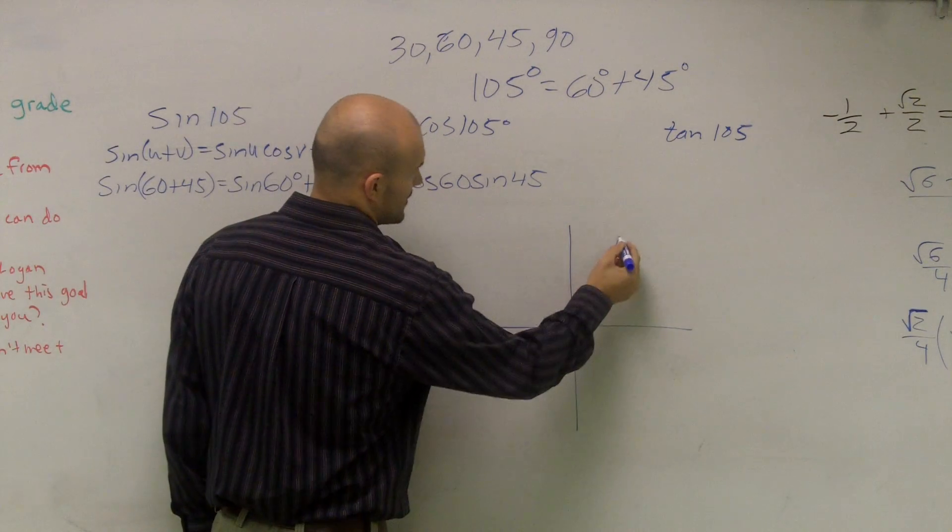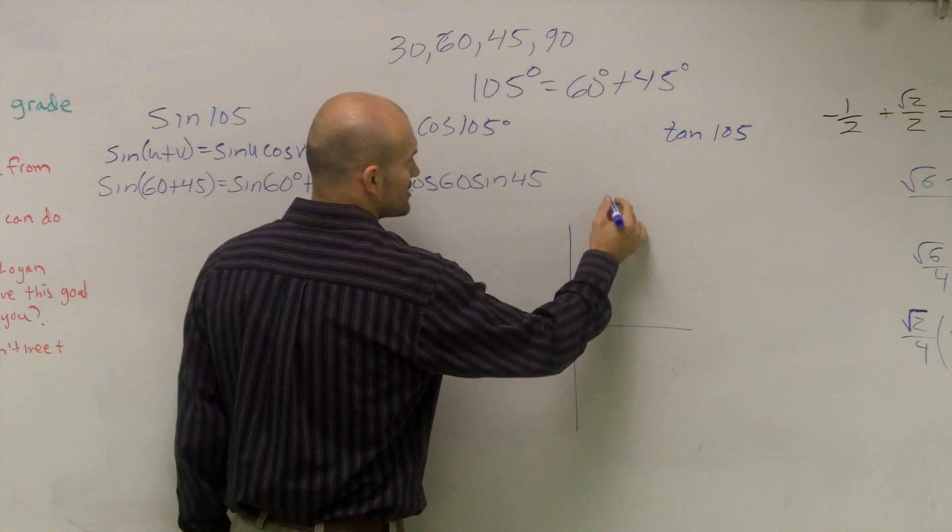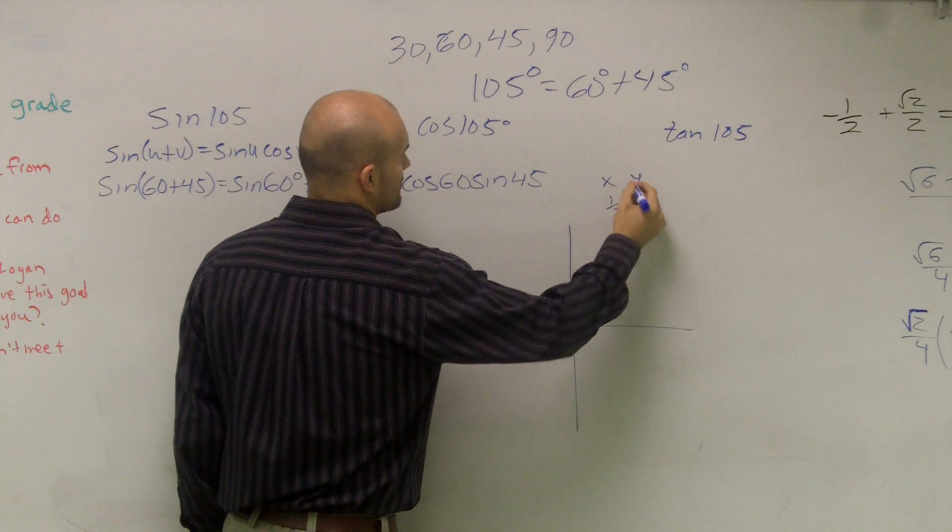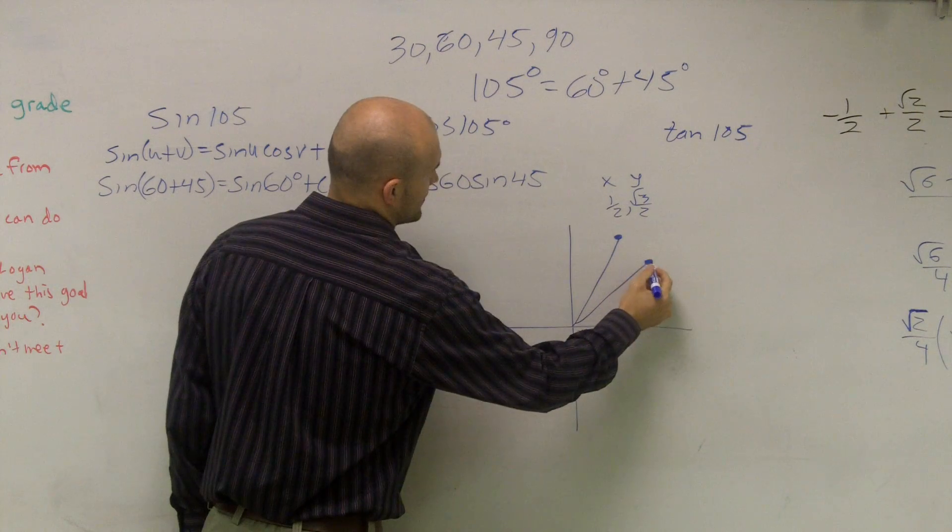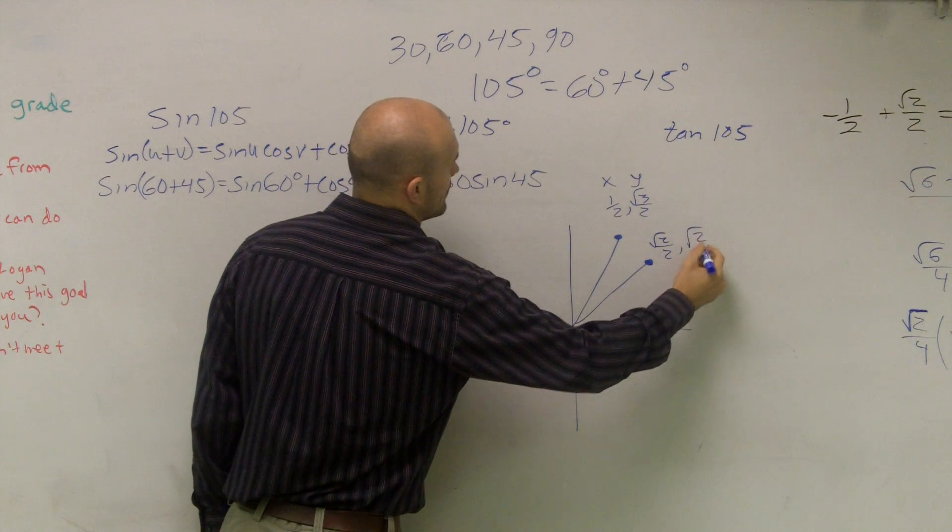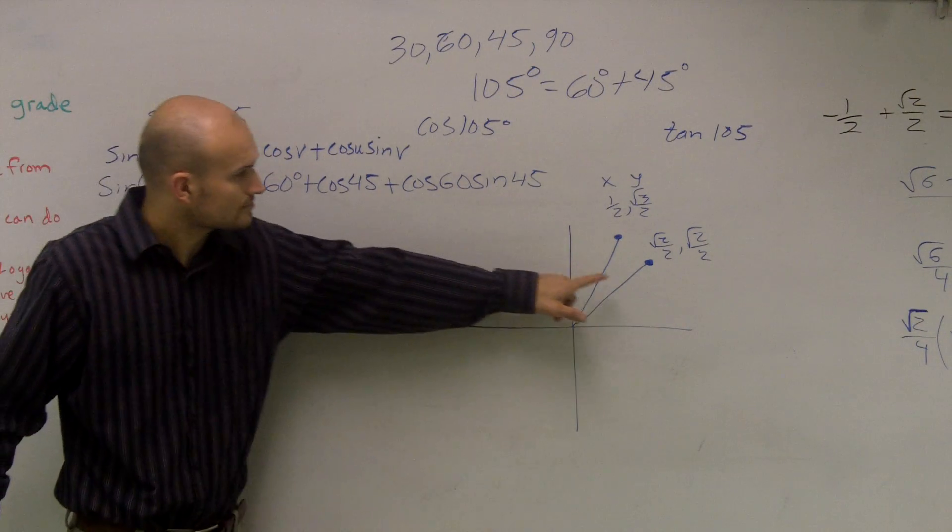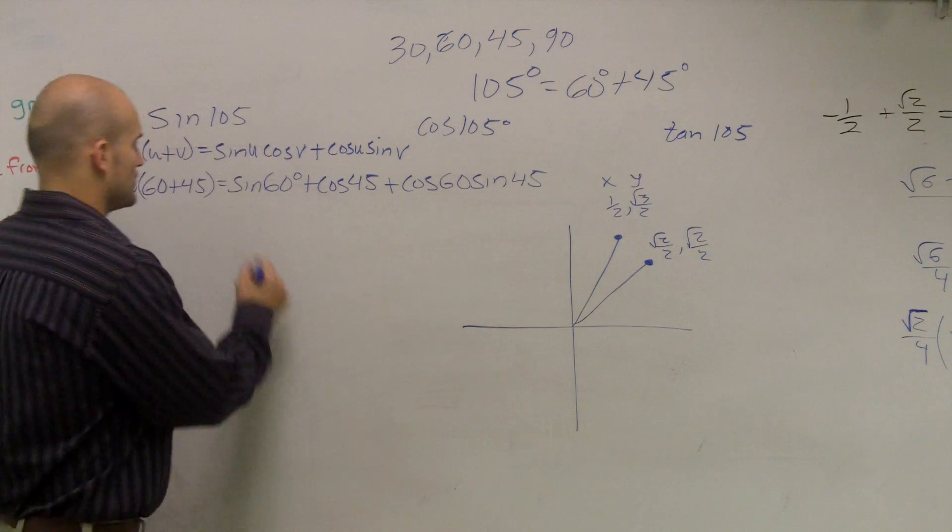So the sine of 60 degrees, if I look up here, this angle is going to be 1 half comma radical 3 over 2 as my x and y coordinates, and then I'll have 45 degrees, which is radical 2 over 2 comma radical 2 over 2. So the sine of 60 degrees is going to give me radical 3 over 2.